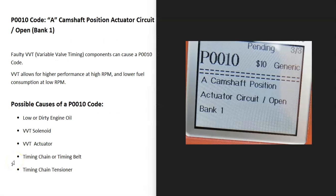Today I'm talking about a P0010 code — what it is and how you go about fixing it. A P0010 code is an A camshaft position actuator circuit open, bank one. The engine can have different components that help time the engine, such as a timing chain or timing belt, and variable valve timing. The vehicle's computer is seeing a problem inside of this and needs troubleshooting.